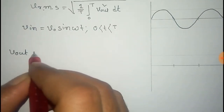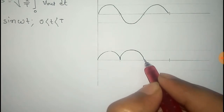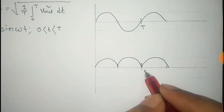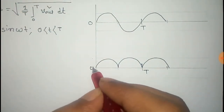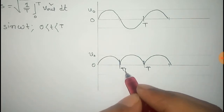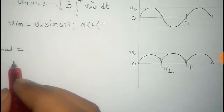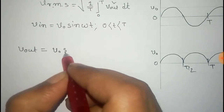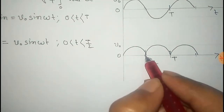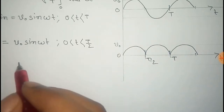The corresponding output signal for the full-wave rectifier will be like this plot. Here the time period is capital T, the initial point is 0, the peak voltage is V₀, and T/2 is the half time period. The output V_out equals V₀ sin(ωt) for the range 0 to T/2, and the signal repeats itself after each T/2 time period.